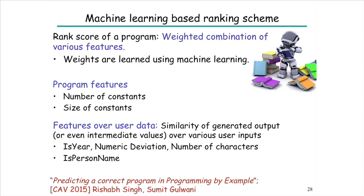The key message is that you want to look at both program features and features in the data in order to predict which of the many programs consistent with the examples is the one the user really intends.